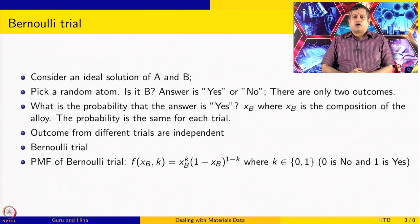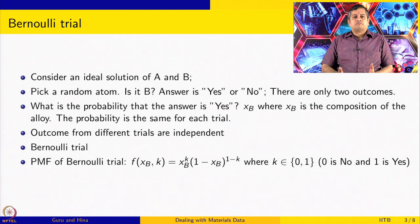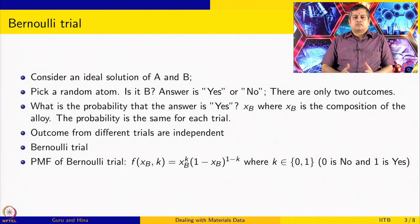Success and failure are in quotation marks, because if your interest is not in B atoms but in A atoms, then finding B atoms will be considered a failure and finding A atoms will be a success. Because there are only two outcomes, success is the complement of failure and vice versa. What is the probability that the answer is yes? In a random solid solution, you pick a random atom — what is the probability that it will be a B atom?